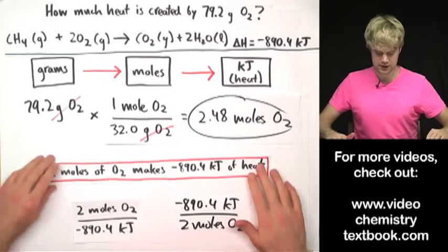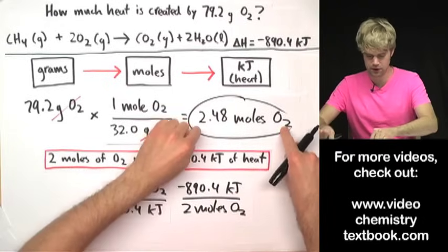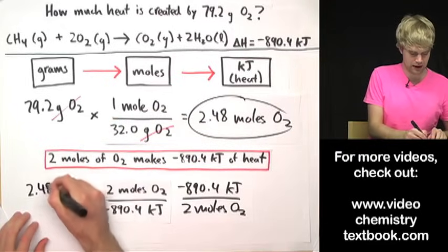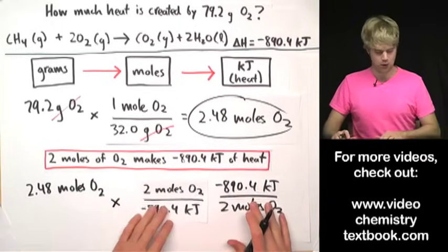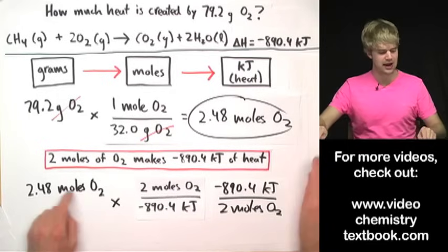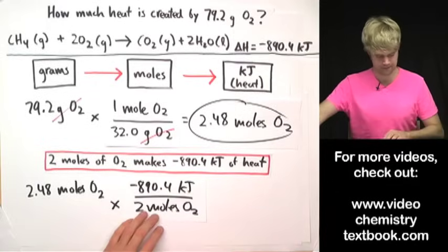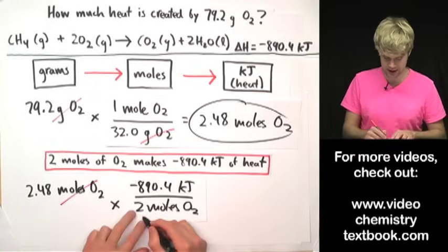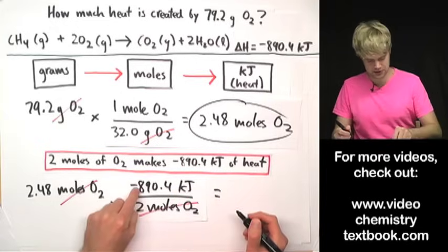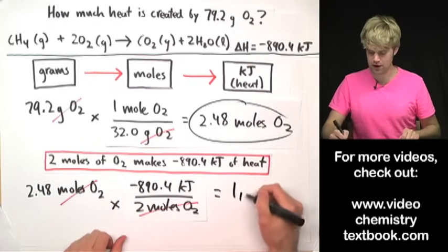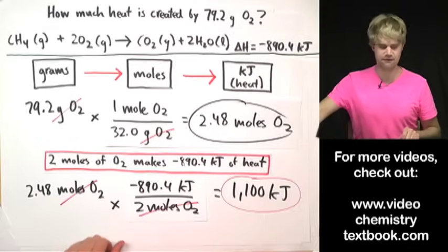Since I'm starting with 2.48 moles of O2, I want the conversion factor that cancels those units — so I use negative 890.4 kilojoules over 2 moles O2. Moles O2 on top cancels moles O2 on the bottom, and the math — this times this divided by 2 — gives me 1,100 kilojoules as my final answer.